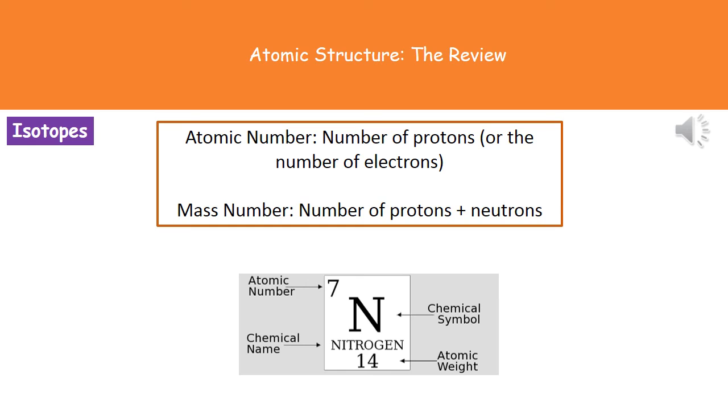So when we're talking about the atomic number, what we're actually referring to there is the number of protons or the number of electrons that that particular atom has inside it. If we think about the mass number, however, that is the number of protons plus the number of neutrons.